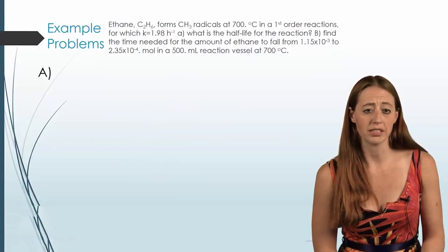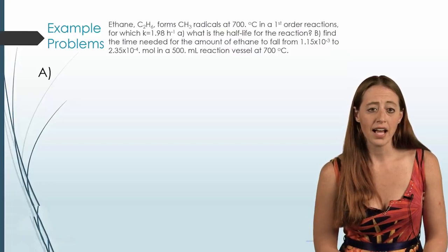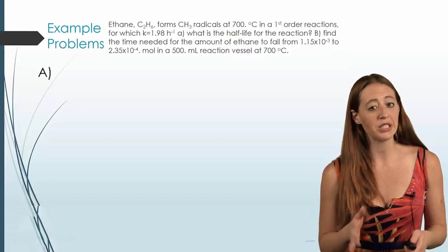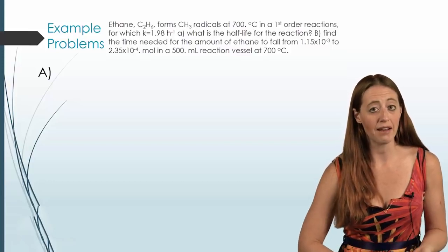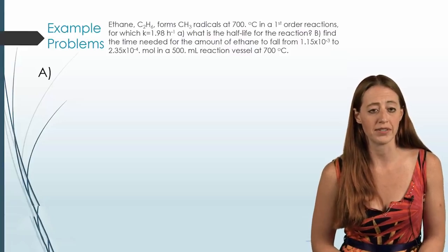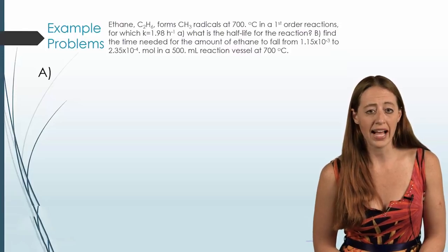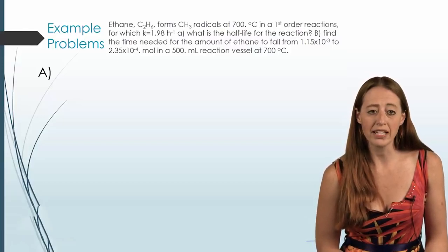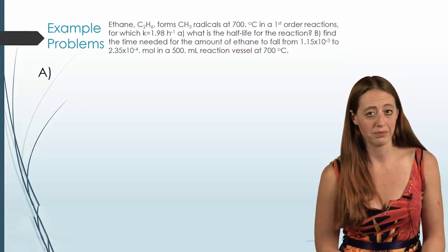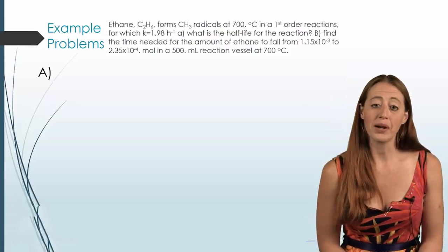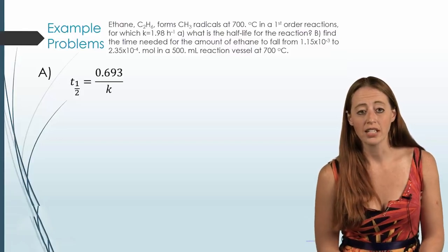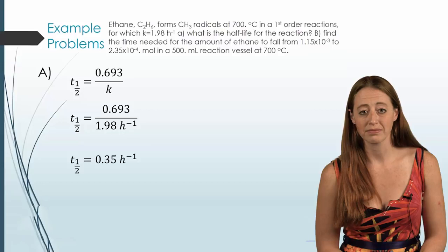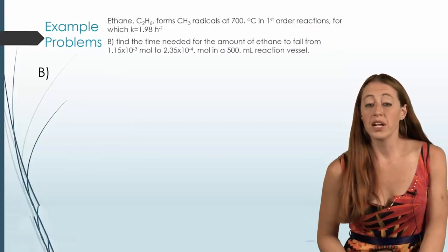Now let's do another, very similar example. We have ethane forming CH3 radicals at 700 degrees Celsius, and I tell you it's a first order reaction — so you know which equation set to use. I give you k. First, this is a two-part question: part A asks for the half-life of the reaction. Since it's first order, you use T½ = 0.693 over k. You simply fill in k and get your half-life. Nothing particularly complicated — just filling into the equation to get a number.